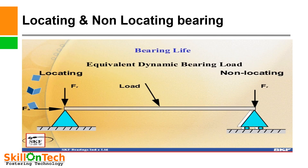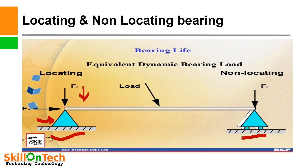Locating and non-locating bearings. In this picture you can see that the locating bearing is fixed with the housing location and must take both axial and radial loads — combined radial and axial loads. The other one is the non-locating side, which accommodates axial displacement of the shaft due to thermal expansion. If both bearings were made locating bearings, then thermal expansion would not be accommodated.